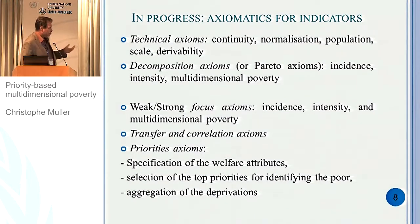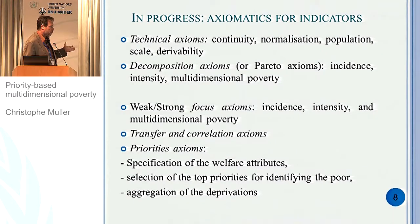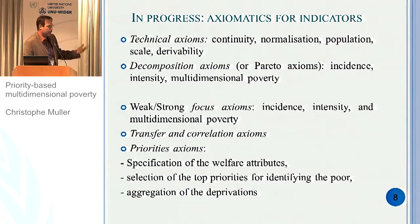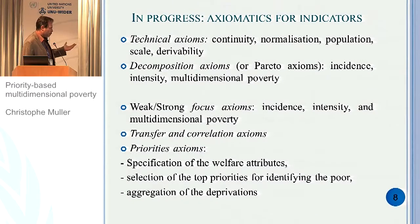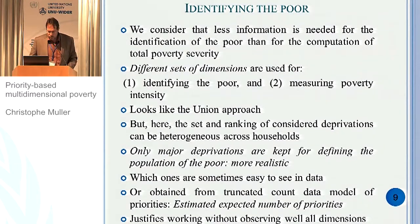There are already some difficulties in reconciling these different kinds of axioms. The axioms I'm going to add are designed to incorporate information on priorities: axioms for the specification of welfare attributes — today I'll simply say the welfare attributes are those that people mention as top priorities — and axioms for aggregating deprivation to generate weights. Today I'll just look at simple cases, but each of these topics can be more or less technical depending on the level of generality you want.